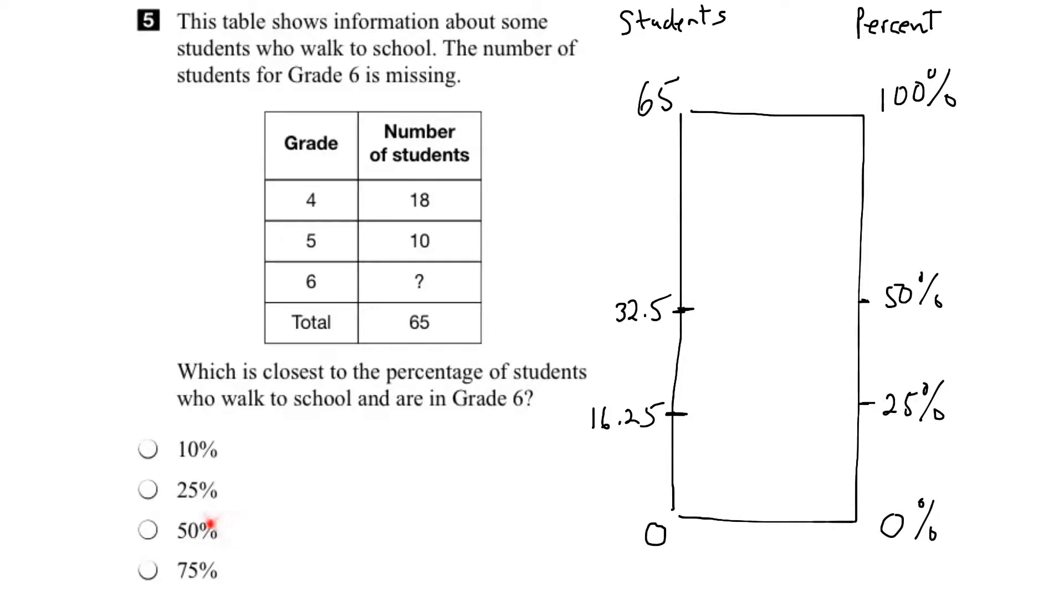Next, we could look at 75%. Well, 75% would be 1, 2, 3 quarters of the way up. So it would be right there. So 75% is 50% plus the 25%. So we would have 32.5 and then add 16.25 which would give us, and that's where it would be on our line here, would be 48.75.